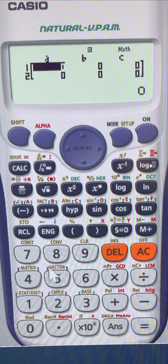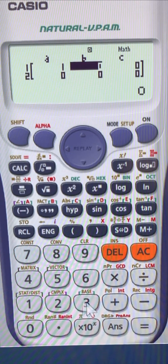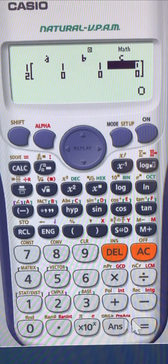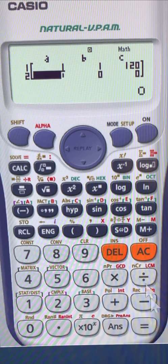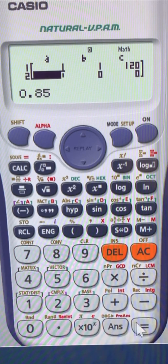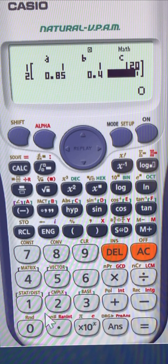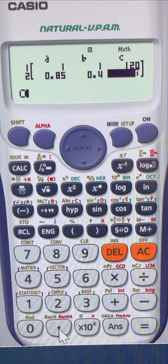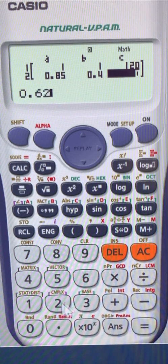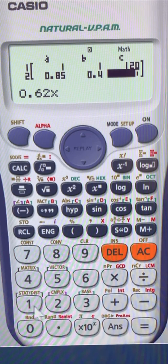So let's say the first one was X plus Y equal, let's say 120, and then the second one, let's say it's 0.85X plus 0.40Y equals, let's say 0.62 times 120.